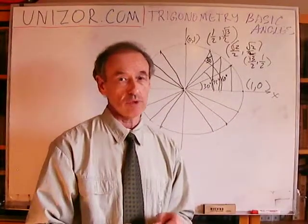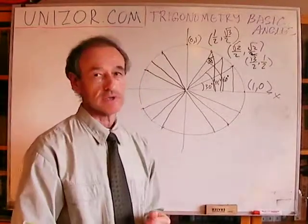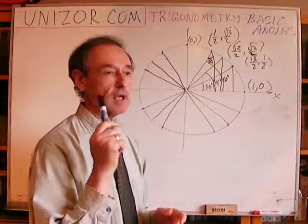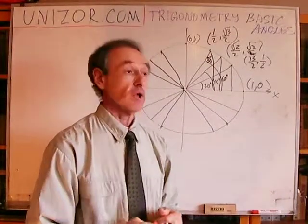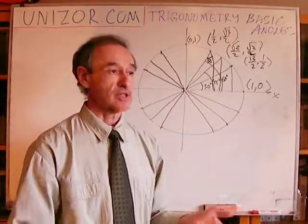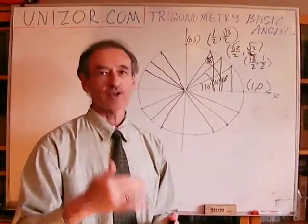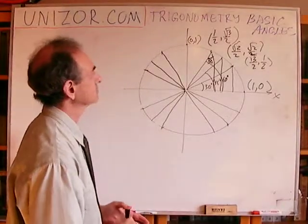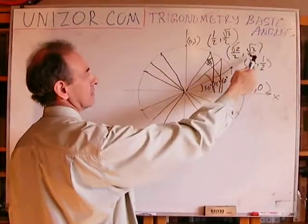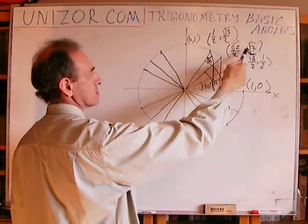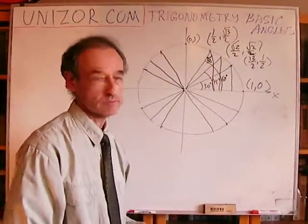The only thing you really have to memorize is the Pythagorean theorem and the one property that the opposite catheter in a 30-degree triangle is one half. Everything else is derivable. Obviously we must memorize the definitions: cosecant is 1 over sine, tangent is sine over cosine, etc. For example, tangent of 45 degrees is sine over cosine, which is √2/2 divided by √2/2 — it's 1. Tangent of 45 degrees is 1.